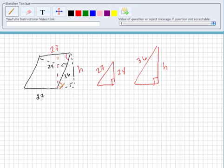So it looks like for my big triangle, that's this angle right here. And for my little triangle, that's also this angle right here.